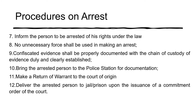Number nine: confiscated evidence shall be properly documented with the chain of custody of evidence duly and clearly established. The chain of custody requires that from the moment evidence is collected, every transfer of evidence from person to person be documented, and it be probable that nobody else could have access to that evidence. Number ten: bring the arrested person to the police station for documentation. Number eleven: make a return of warrant to the court of origin. Number twelve: deliver the arrested person to jail or prison upon the issuance of a commitment order of the court.